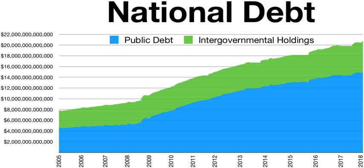As of July 31, 2018, debt held by the public was $15.6 trillion and intragovernmental holdings were $5.7 trillion, for a total of $21 trillion. As of October 28, 2018, public debt was $15.8 trillion and intragovernmental holdings were $5.8 trillion, with a total of $21.7 trillion. Debt held by the public was approximately 77% of GDP in 2017, ranked 43rd highest out of 207 countries. The CBO forecast in April 2018 that the ratio will rise to nearly 100% by 2028, perhaps higher if current policies are extended beyond their scheduled expiration date. The national debt can also be classified into marketable or non-marketable securities.